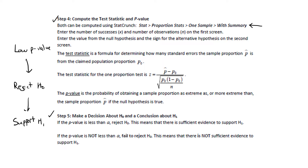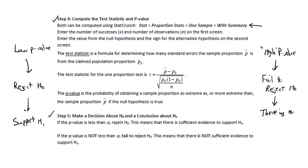However, if the p-value is not lower than alpha, then we fail to reject the null hypothesis, and that means we don't have enough evidence to support H1. So to recap: a low p-value leads to rejecting the null hypothesis, which leads to supporting the alternative hypothesis H1. A high p-value — meaning anything not lower than alpha — means we fail to reject H0, and there is not enough evidence to support H1. On the next few screens we'll work through examples, and these steps will start to sink in as we go.